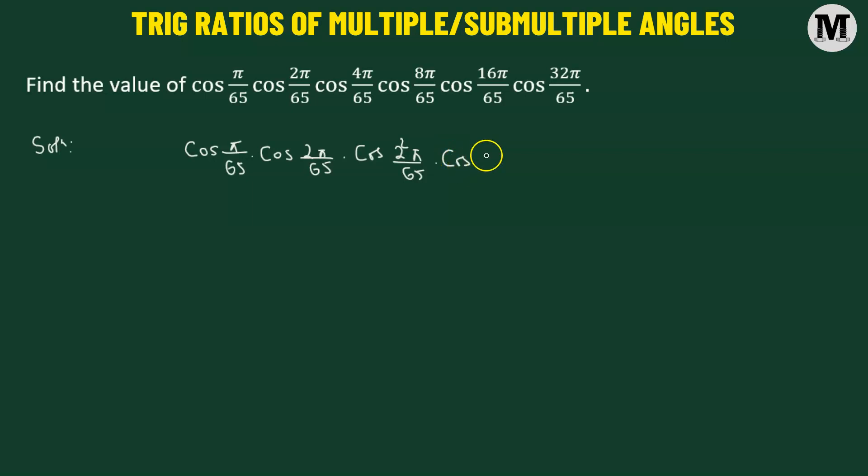Multiply to cosine of 8 pi, so that becomes 2 cubed pi over 65, multiply to cosine of 2 raised to the power of 4 pi over 65, multiply to cosine of 2 raised to the power of 5 times pi divided by 65.